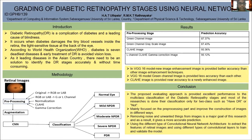Firstly, I get the original images from the Kaggle database. I obtained 3,755 datasets from Kaggle and performed some preprocessing on the original images. The images are converted to RGB or LAB color space, and from these, the green channel or L channel is extracted.